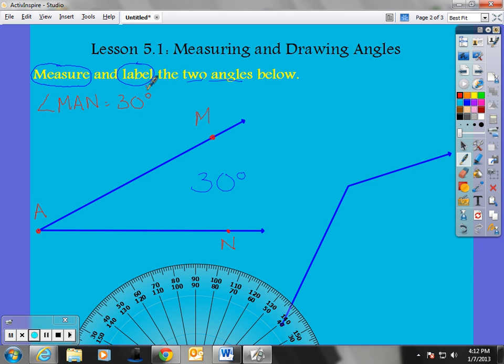Also, I have the measure of angle NAM. That also equals 30 degrees. Notice how A is in the middle. That is my vertex. I could also just say angle A equals 30 degrees. So, there's three ways to label that.